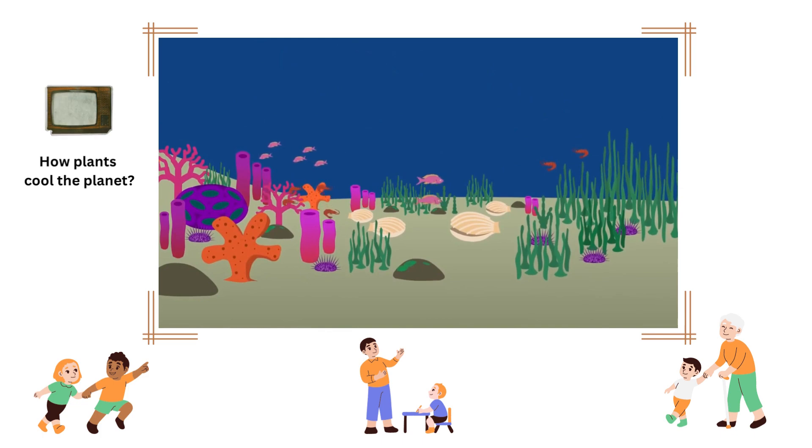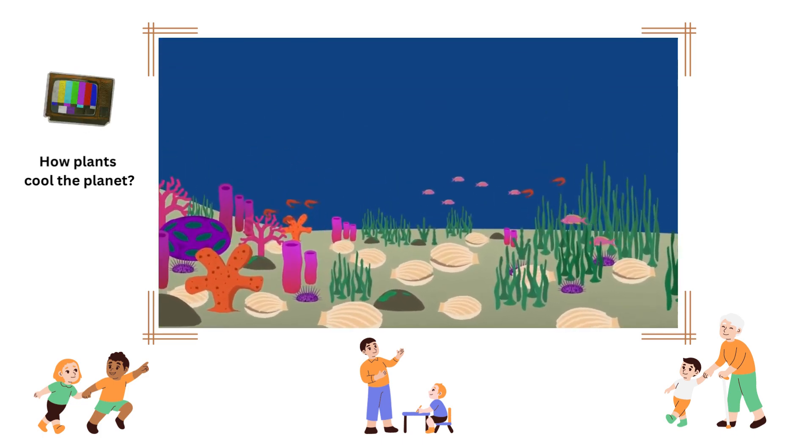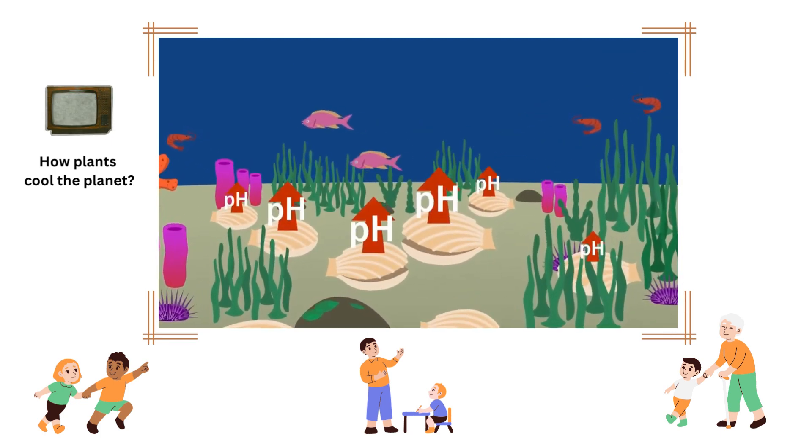When reefs, estuaries, and kelp forests are healthy, shellfish thrive, and their shells take carbon out of the atmosphere, while also counteracting ocean acidification.